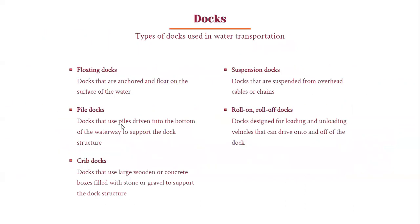Types of docks used in water transportation: floating docks are docks that are anchored and float on the surface of the water. Pile docks use piles driven into the bottom of the waterway to support the dock structure. Crib docks use wooden or concrete boxes filled with stone or gravel to support the dock structure. Suspension docks are suspended from overhead cables or chains. Roll-on roll-off docks are designed for loading and unloading vehicles directly onto the dock.